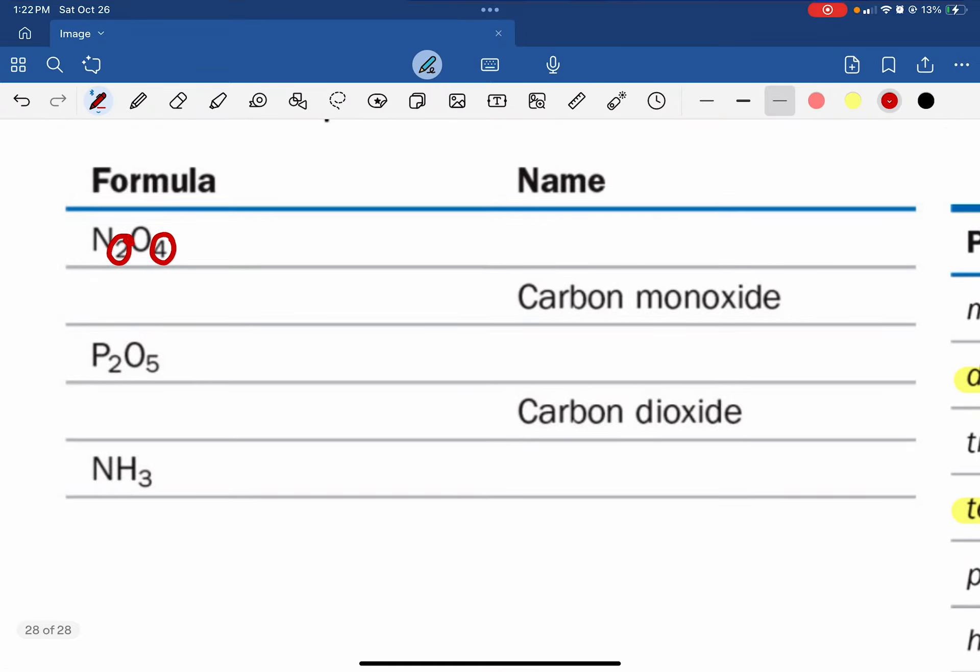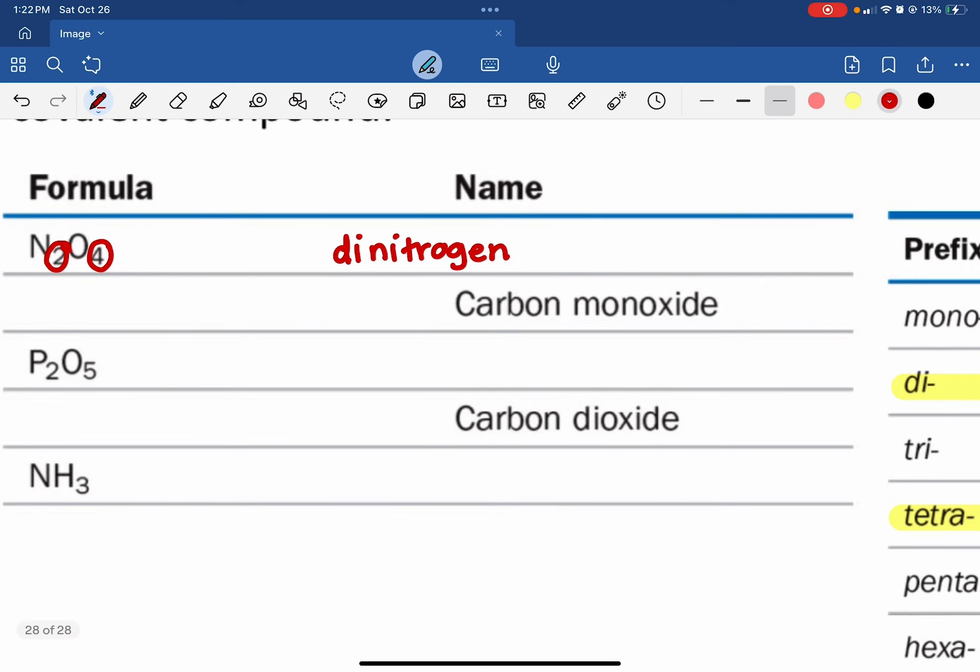So this would be di, and for the first element, we just list the name with no changes at all to it. So dinitrogen. For the second element, we go ahead and list our prefix, and four was tetra. So tetra, and like ionic compounds, we write the first half of the name and then the suffix ide behind it. So that would be tetraoxide, dinitrogen tetraoxide.